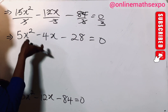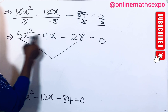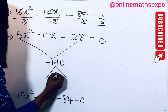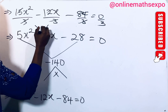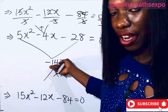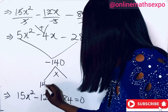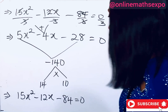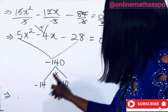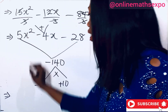We'll use the factoring method. Because the coefficient of x² is 5, multiply 5 by −28 to get −140. We need two numbers that multiply to −140 and add to −4. The two numbers are −14 and +10, since (−14) × 10 = −140 and −14 + 10 = −4.